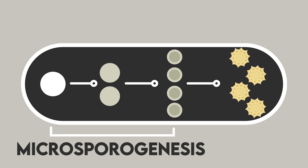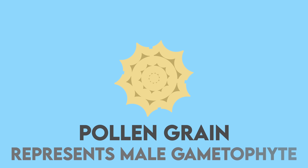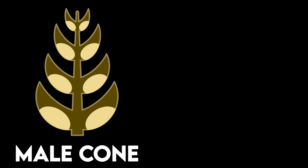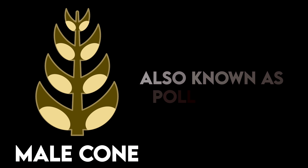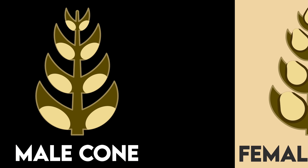The process of formation of microspores from microspore mother cells is called microsporogenesis, while the development of pollen from microspores is called microgametogenesis. The pollen represents the male gametophyte of gymnosperms. As the male cone ultimately forms the pollen, it is also called the pollen cone.